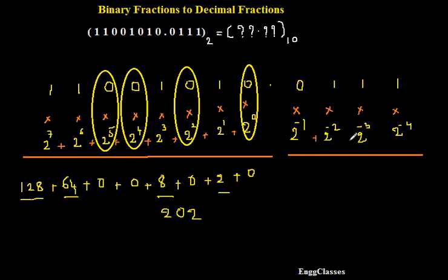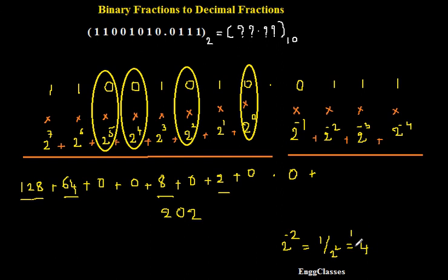So, 0 into 2 to the power minus 1 — 2 to the power minus 1 is 1/2, and into 0 that turns out to be 0, so I don't consider it. Plus 1 into 2 to the power minus 2 — 2 to the power minus 2 can be written as 1 divided by 2 to the power 2, which is 1/4. And 1/4 turns out to be 0.25.